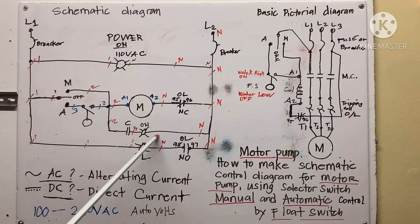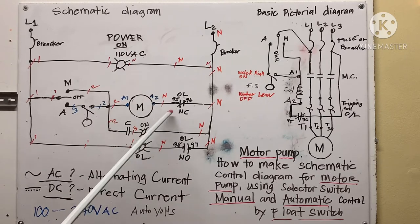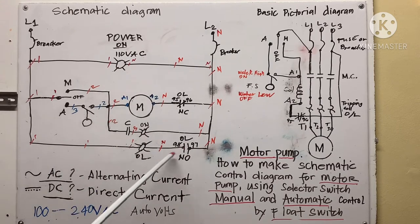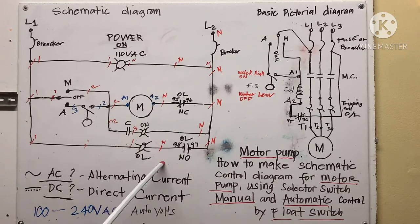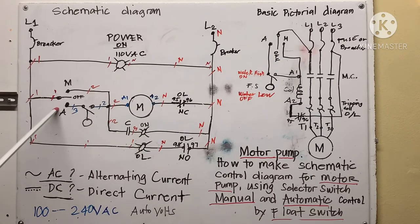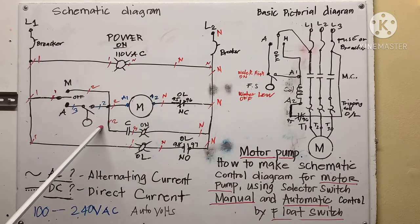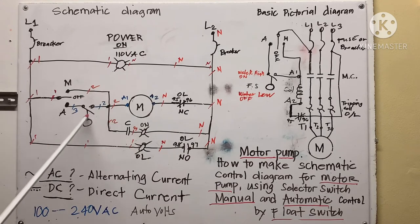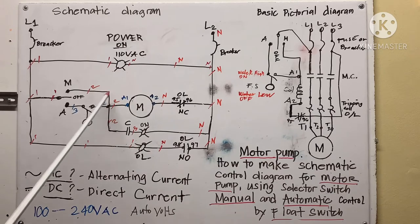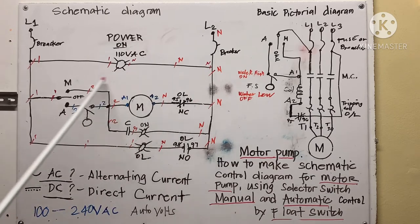When the motor is overloaded, this contact opens, and the overload indicating light comes on. When you put it in automatic, it's controlled by the float switch. When the water level closes the float switch contact, it goes automatic — that's why I made this schematic diagram.